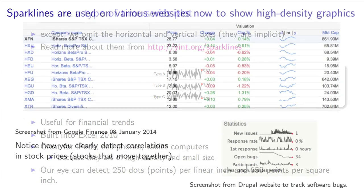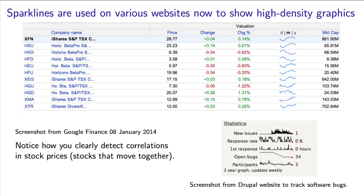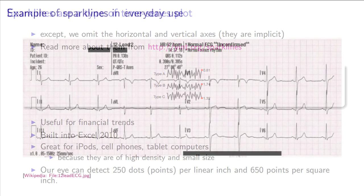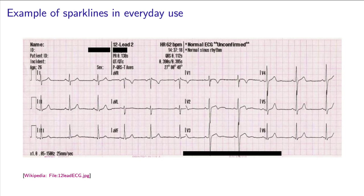Sparklines are showing up far more on various websites and software tools. They're an incredibly useful device for showing data on cell phones and small tablet displays. They exploit the fact that our eye can distinguish 250 points per linear inch, or about 650 points per square inch — that's our eye's resolution ability. Sparklines are not an entirely new invention; they have been used on medical charts for decades.